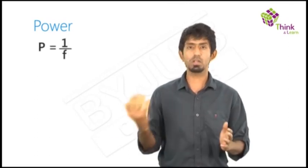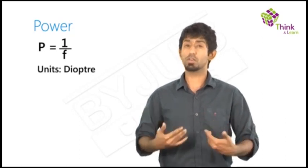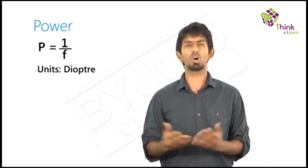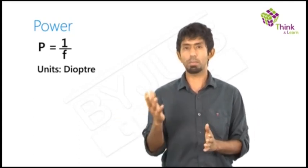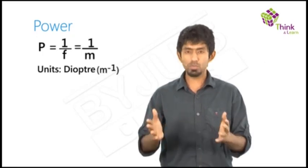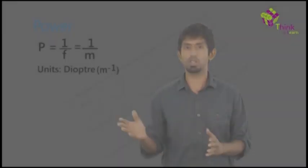And this quantity called power, which is one by focal length, is measured in a unit called diopters. A very simple unit, because otherwise we'll have to talk about these quantities in a very, very non-convenient manner. So you have diopters, and what is the unit of diopters going to be? One by focal length, meter inverse, right? So with this, we understand that power is just a convenient way to talk about focal length.